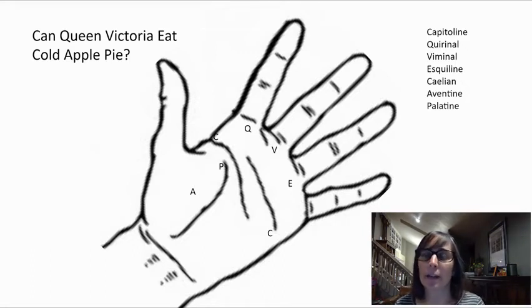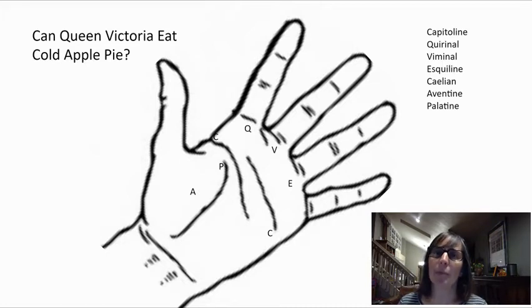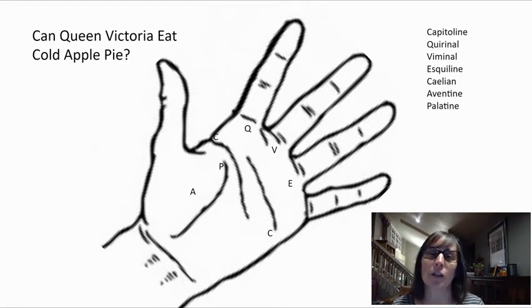The hills are called the Capitoline, the Quirinal, the Viminal, the Esquiline, the Caelian, the Aventine, and the Palatine. And a way to help you remember all of those is to remember the phrase, can Queen Victoria eat cold apple pie? And the first letter of each of those words is also a first letter of each of the hills.